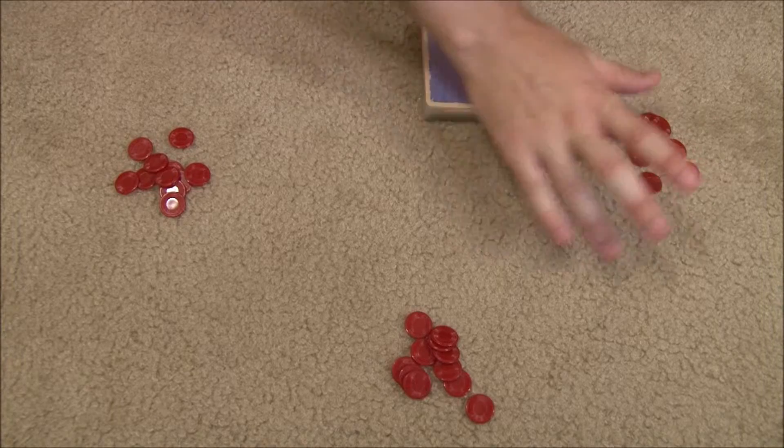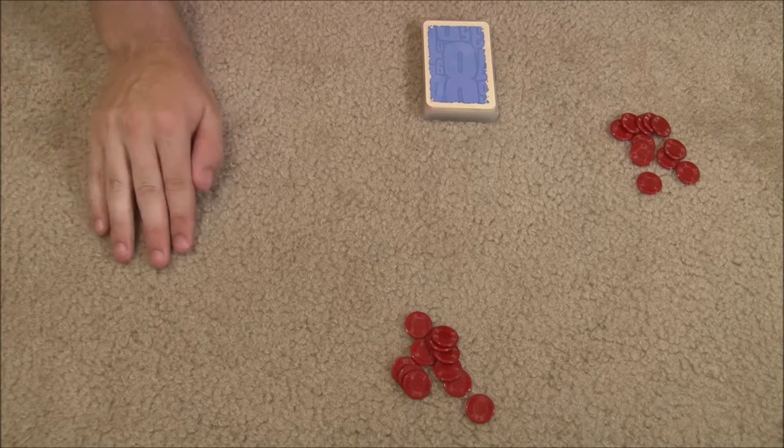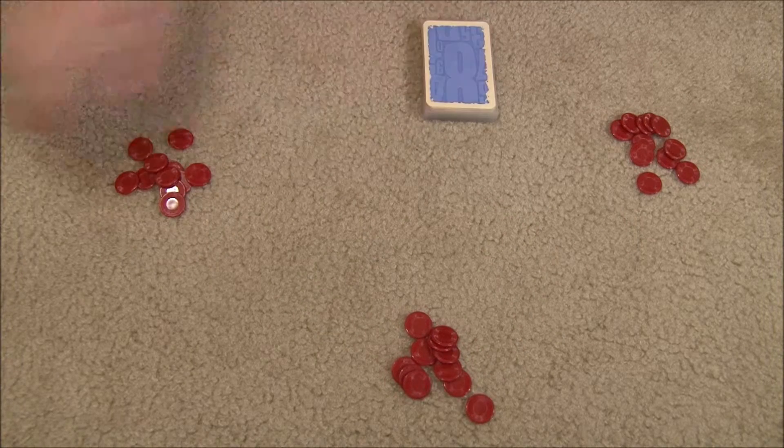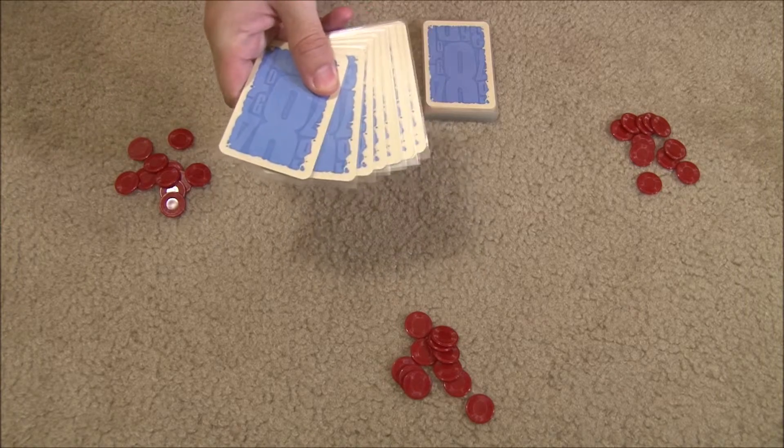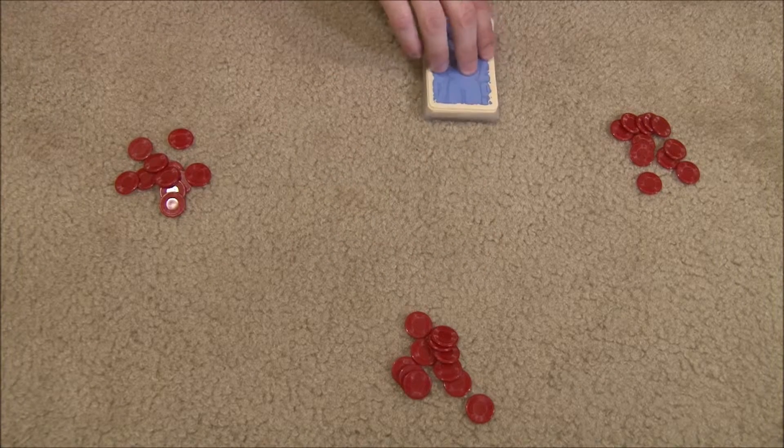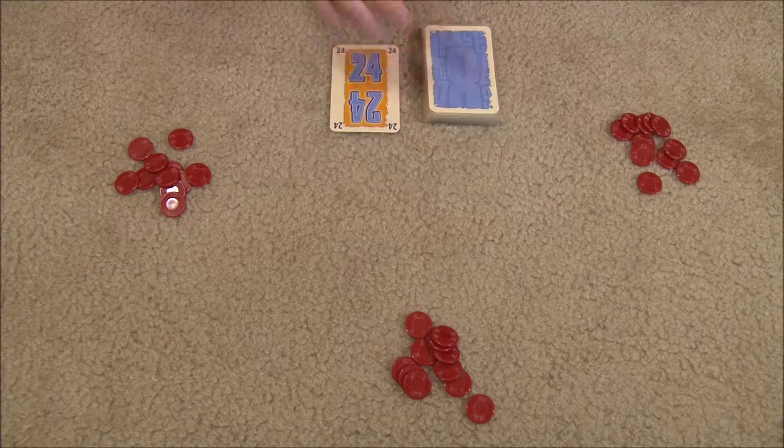This is No Thanks setup for a three-player game. You give each player 11 chips, which they can actually keep hidden from the other players during the game. Then you shuffle the deck and remove nine cards from it without looking at them. They're going to be out of the game, and the rest just forms a face-down stack. You flip one card face-up and you're ready to begin.